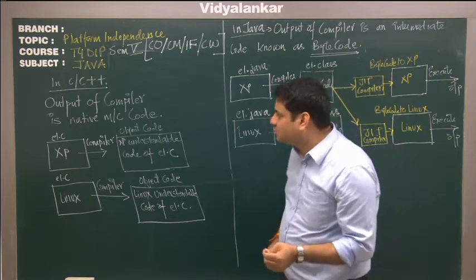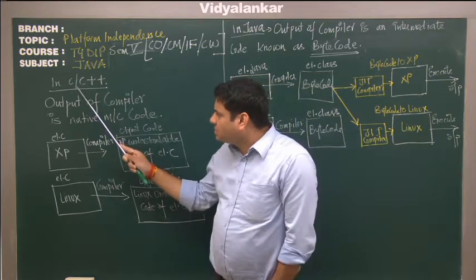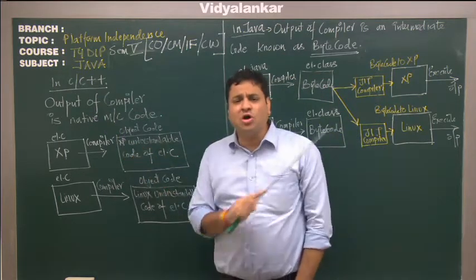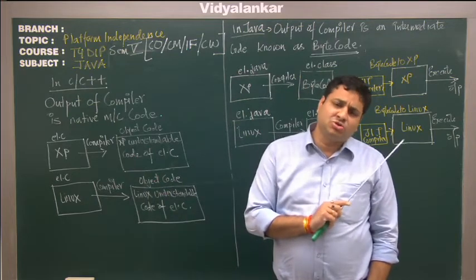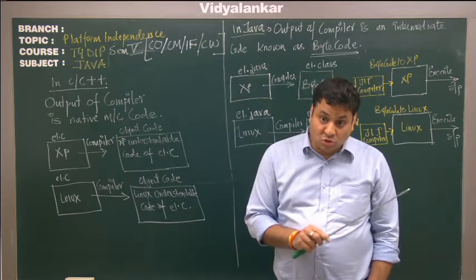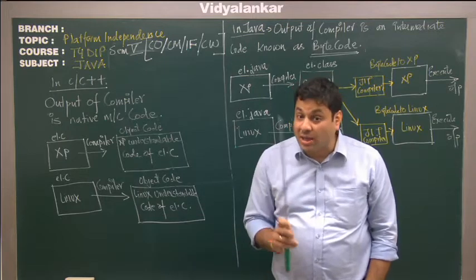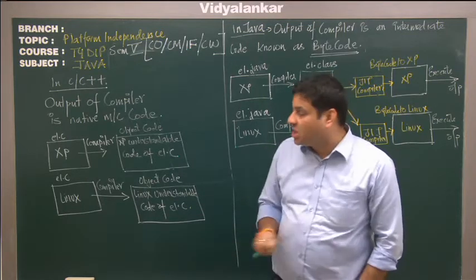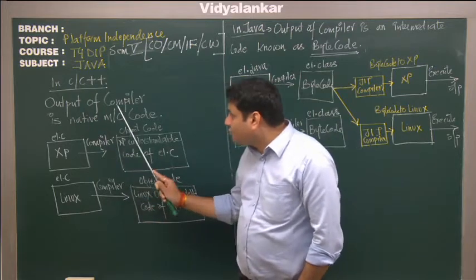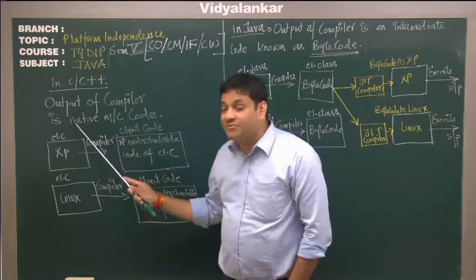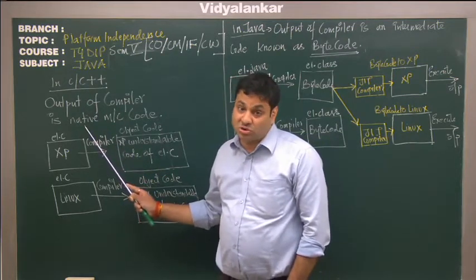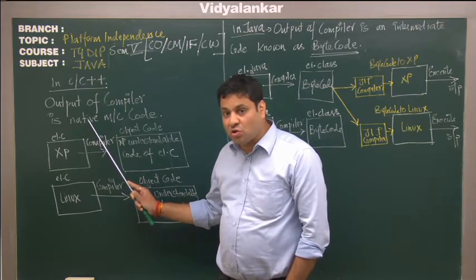Now what happens in C, C++? As we all know, the job of compiler is to convert the source code into machine understandable code. Now what happens in C, C++ is the output of compiler is native machine code. Now that's what is very crucial - native machine code.